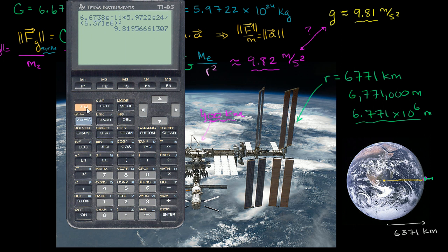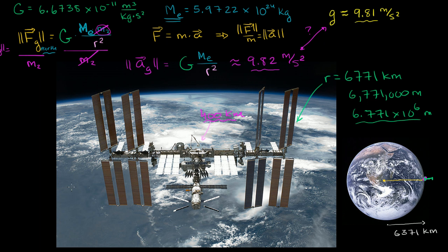Going back to the calculator, we use the same expression but replace 6.371 times 10 to the 6th with 6.771 times 10 to the 6th. We get 8.69 meters per second squared. You can verify the units: G is in meters cubed per kilogram second squared, multiplied by the mass of Earth in kilograms — the kilograms cancel — then divided by meters squared, leaving meters per second squared.